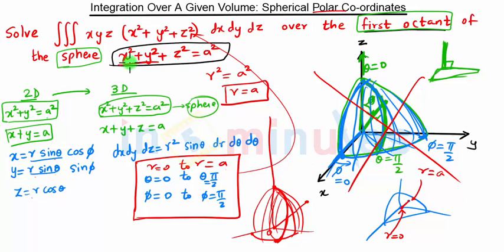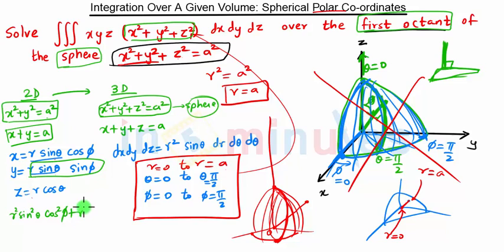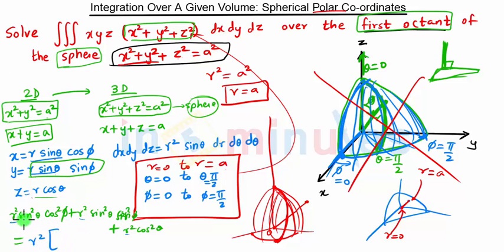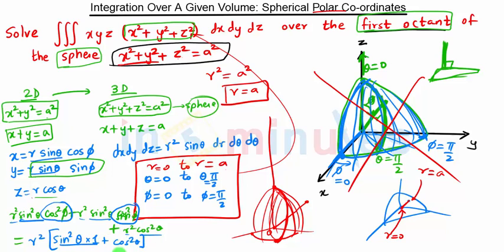Substituting the spherical coordinates: x² = r² sin²θ cos²φ, y² = r² sin²θ sin²φ, z² = r² cos²θ. Taking r² common, and then taking sin²θ common from the first two terms, we get cos²φ + sin²φ = 1. So we have r²(sin²θ + cos²θ) = r² × 1 = r². Therefore x² + y² + z² = r².